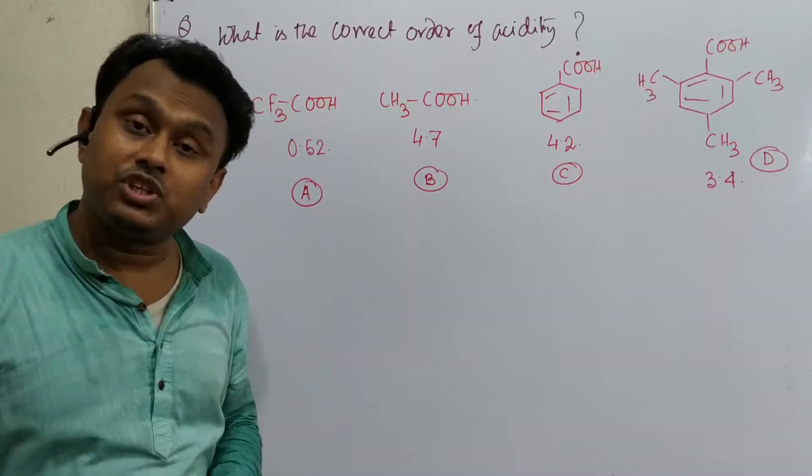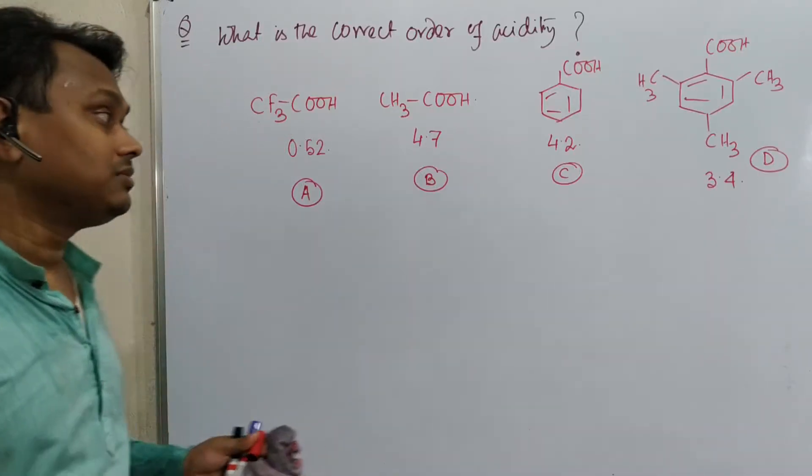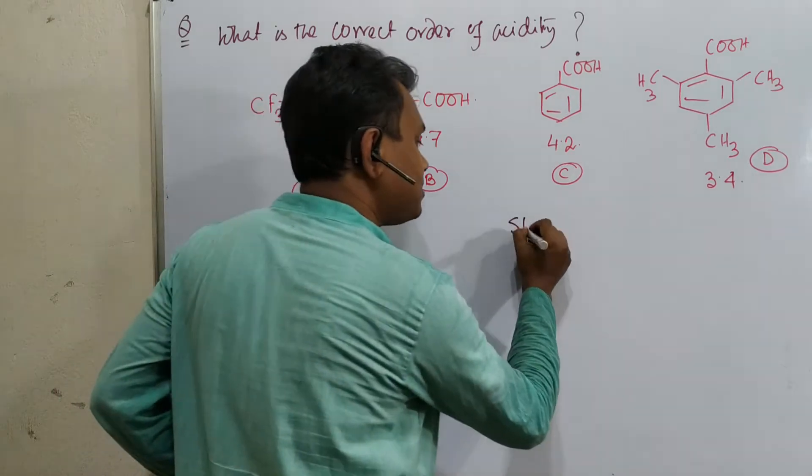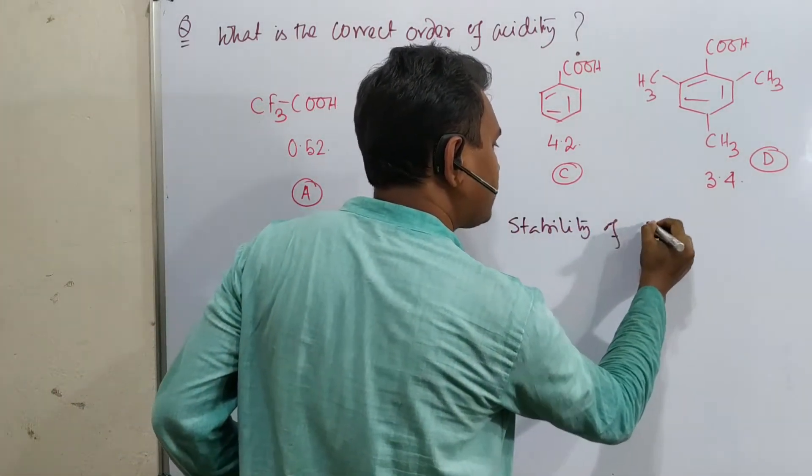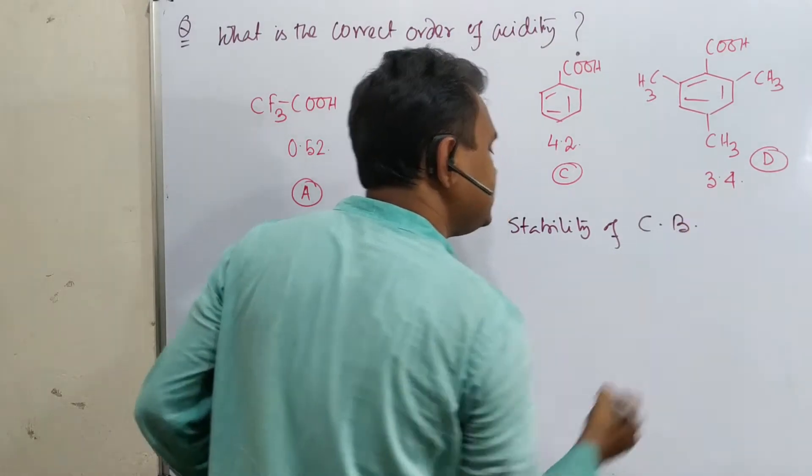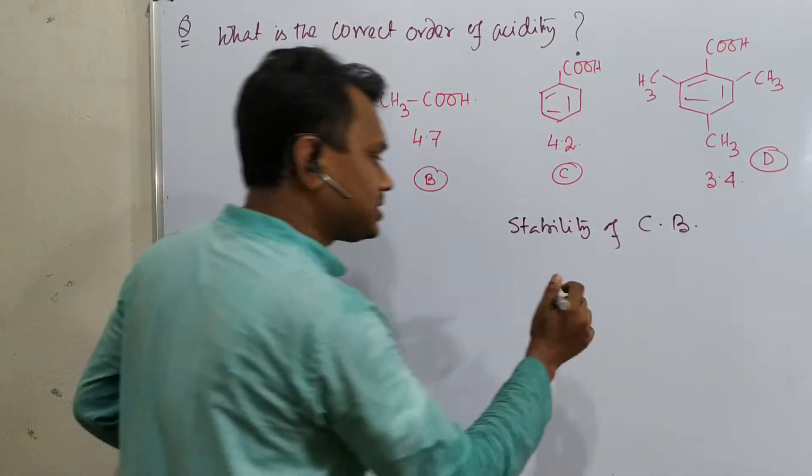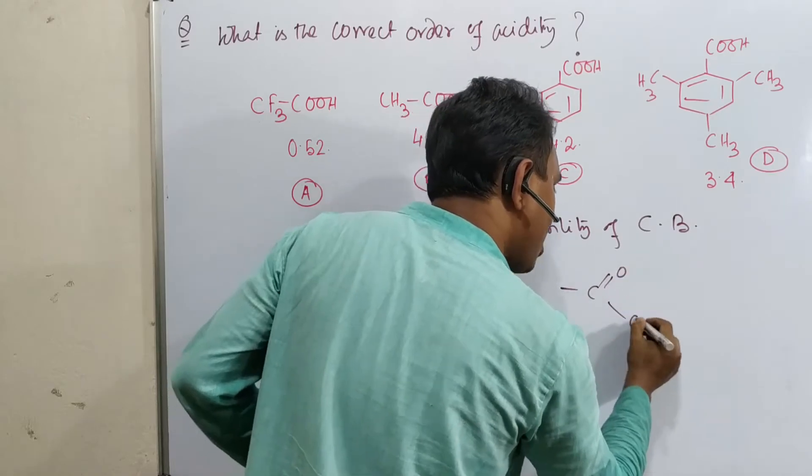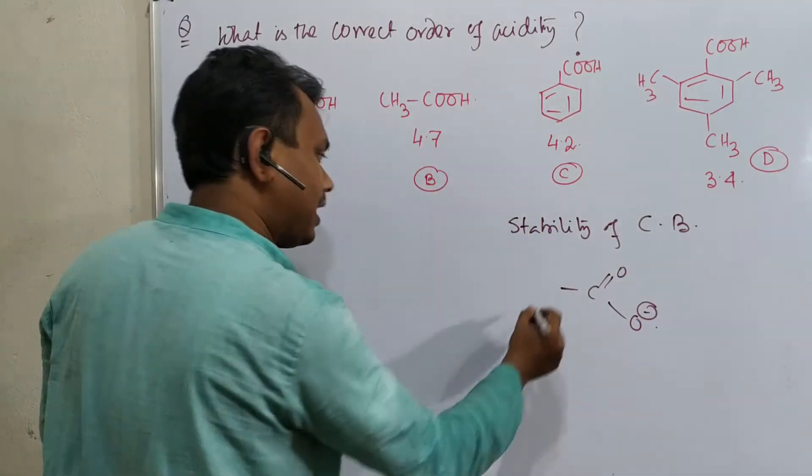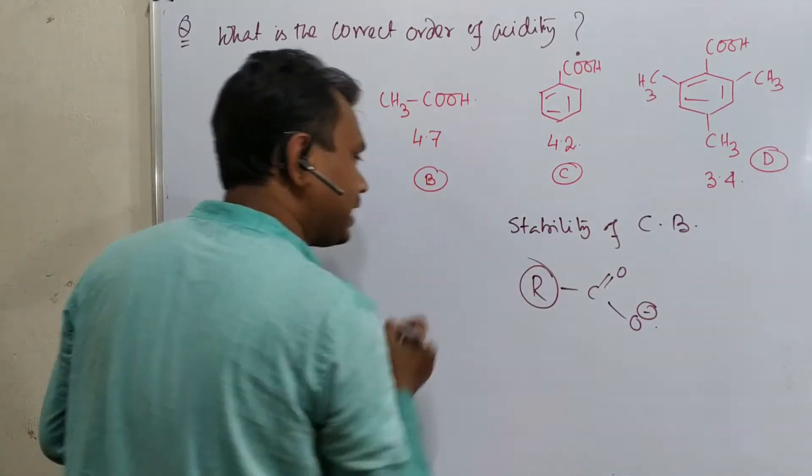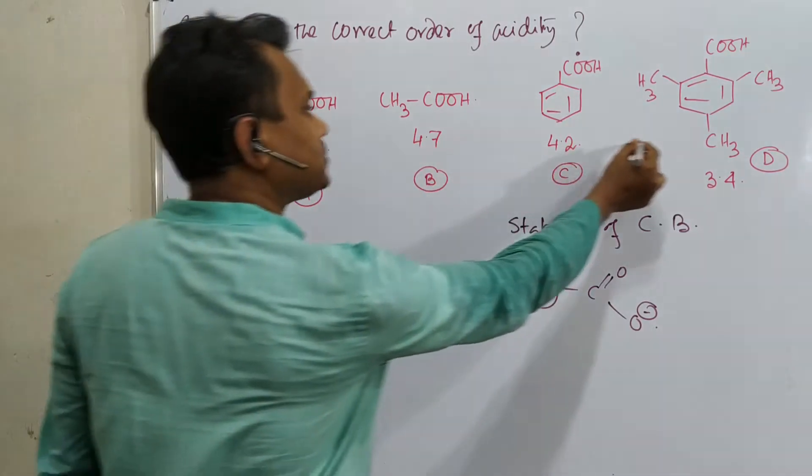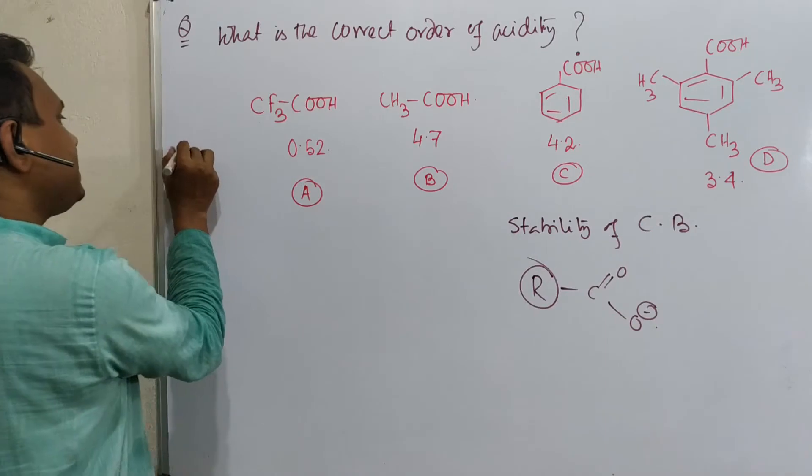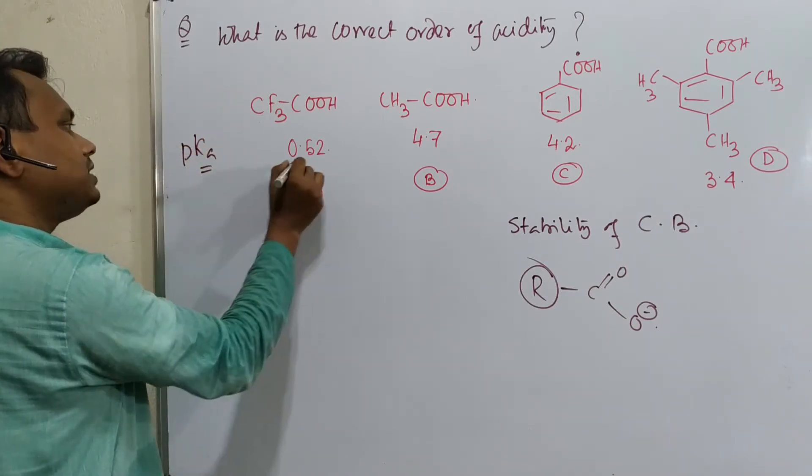Now I shall give a very fast explanation about this. When we ask something about strong acid, we determine the stability of conjugate base. And in this case, all are carboxylic acids, so we will discuss the stability of carboxylate ion. These are the different R groups. See these values, these are the pKa values of these acids.